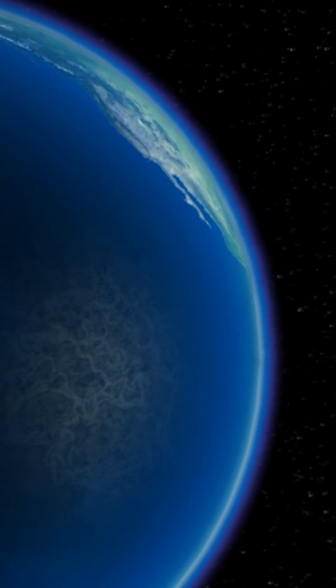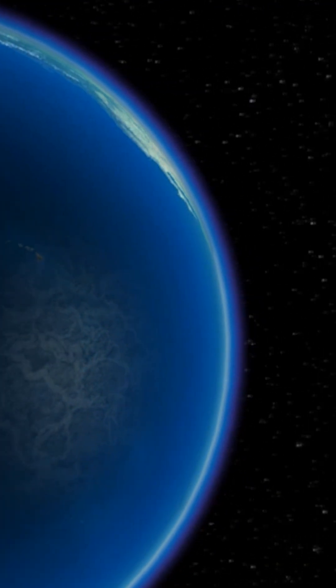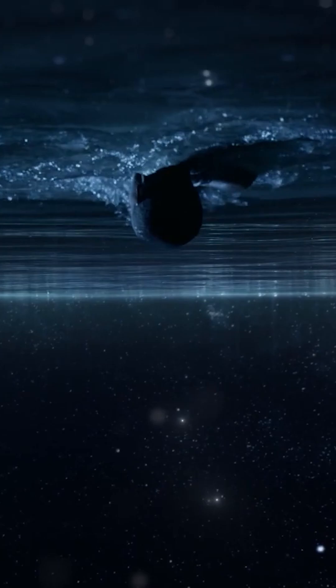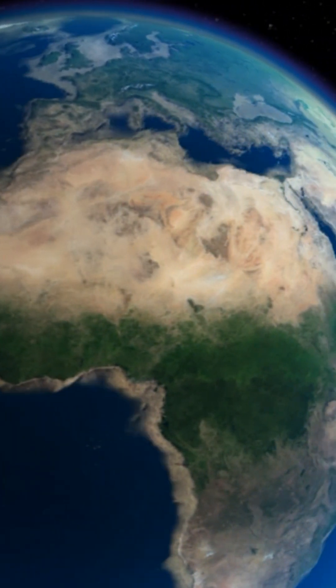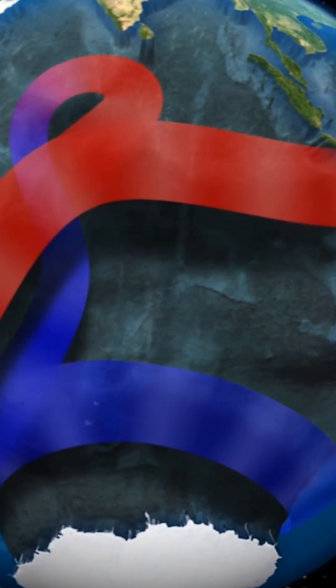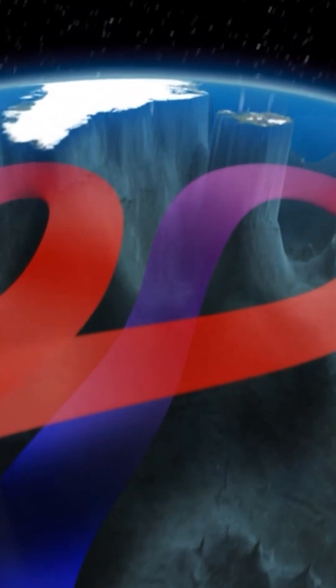We've all grown used to thinking of Earth as the blue planet, but not many people stop and ask the deeper question: why is there so much water in the first place? What made it so that 71% of our planet's surface is covered in oceans and seas?